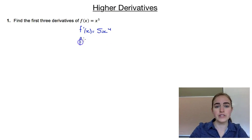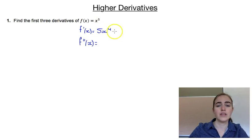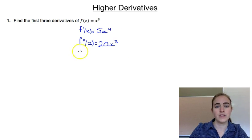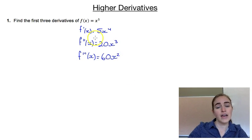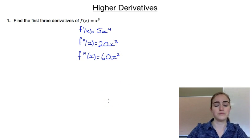For our second derivative, we're now differentiating this function. So 4 times 5 would give us 20, and our x would be to the power of 3. And if we find our third derivative, we're differentiating this new one — so 3 times 20 would be 60x squared. And we could continue going as well.